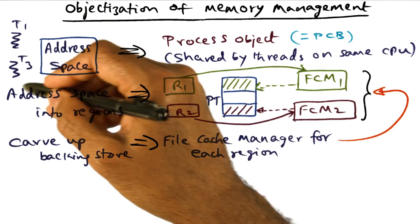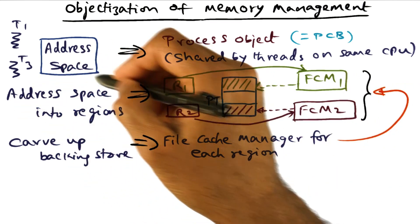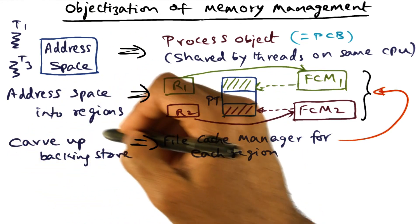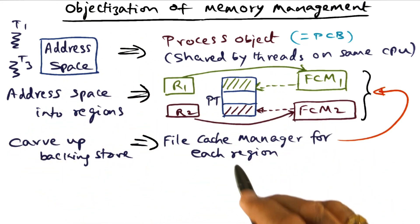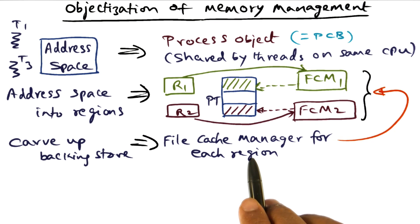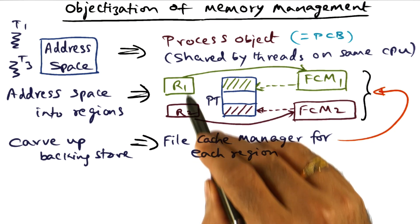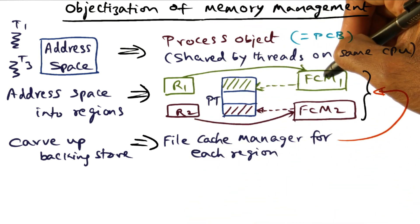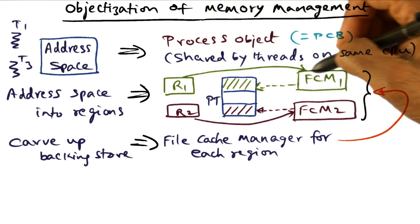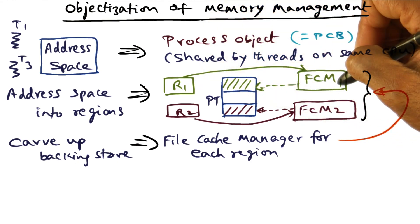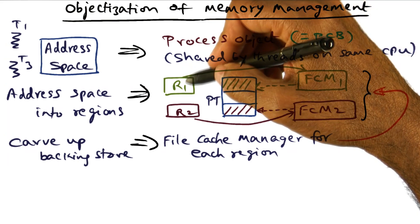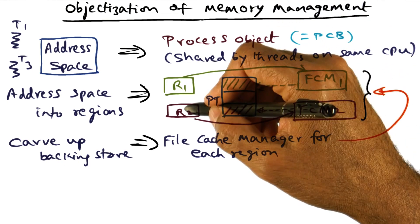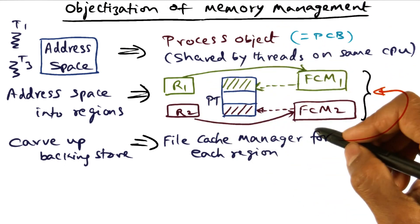Similar to breaking up the address space into regions, we're going to carve up the backing store also into what are called file cache managers that back each one of these regions. So FCM1 is a piece of the storage subsystem that backs region R1, and similarly FCM2 backs region R2.